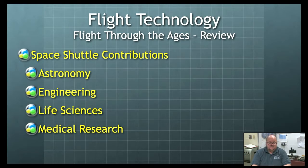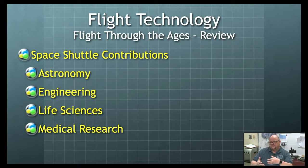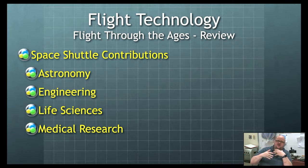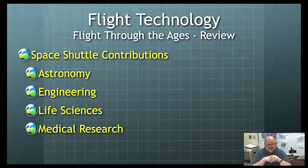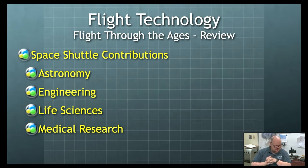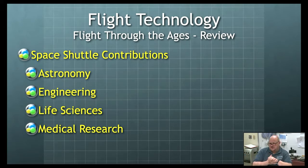Then we had to learn about life sciences — concentrating on what happens to our body in space for longer durations. Before this, trips weren't that long. We were able to take treadmills up into space and do research on how our body reacts to longer terms in space. And then there's medical research: how does our body survive? We also think about growing food like lettuce in space, because we're going to be out there for a longer time. Those four areas — astronomy, engineering, life sciences, and medical research — were the Space Shuttle's real big contributions.